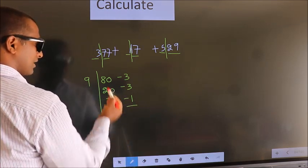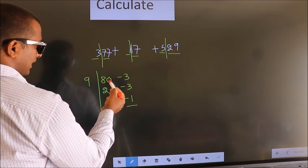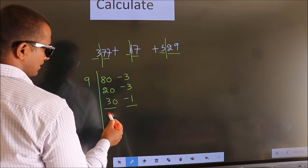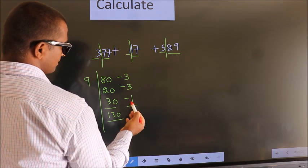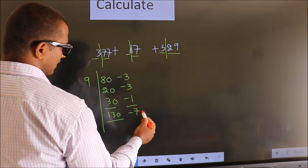Now add. 80 plus 20, 100 plus 30, 130. Minus 3, minus 3, minus 6, minus 6, minus 6, minus 1 is minus 7.